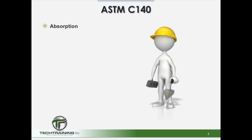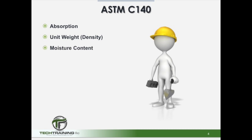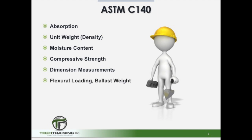These properties include the absorption of the unit, measured in pounds per cubic foot as well as a percentage of the weight of the unit. It also covers the unit weight or density of the unit, the moisture content of the unit, as well as the compressive strength of the unit. To get these measurements we will need the dimensions of the unit as well. Also covered in this standard is flexural loading and ballast weight.